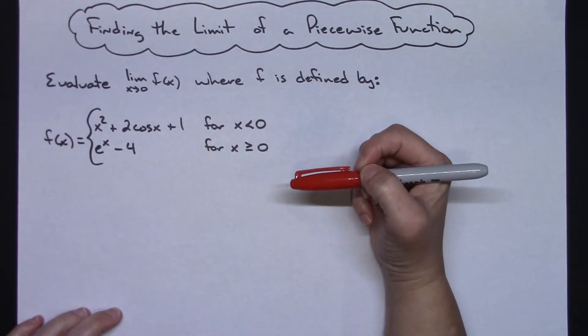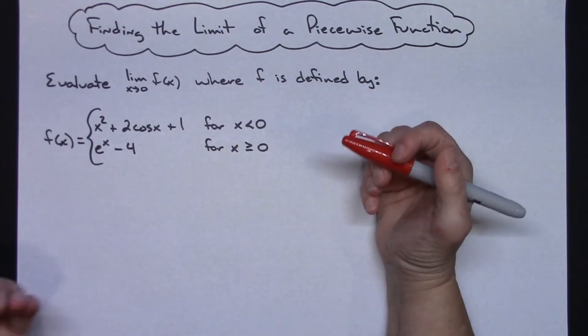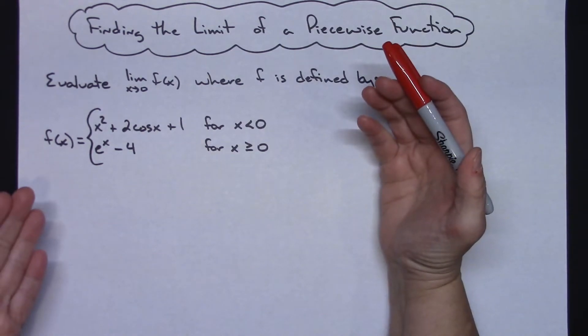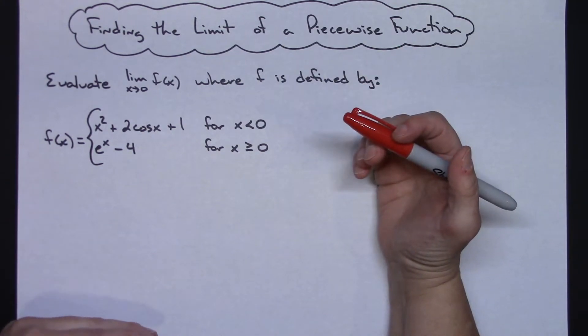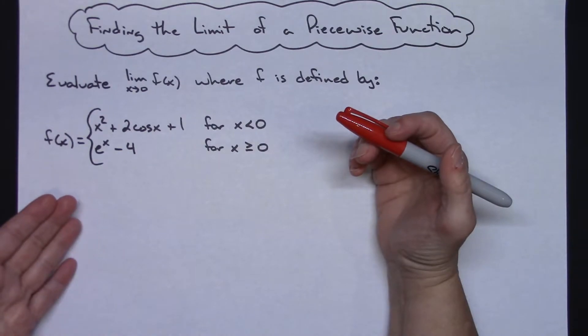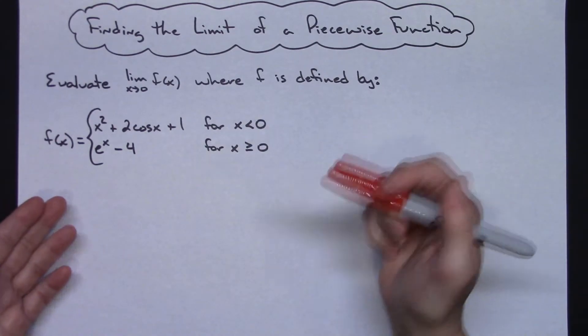So to evaluate this limit we're going to have to look at one-sided limits. We're going to look at the limit as x approaches 0 from the left, and then we will also look at the limit as x approaches 0 from the right.